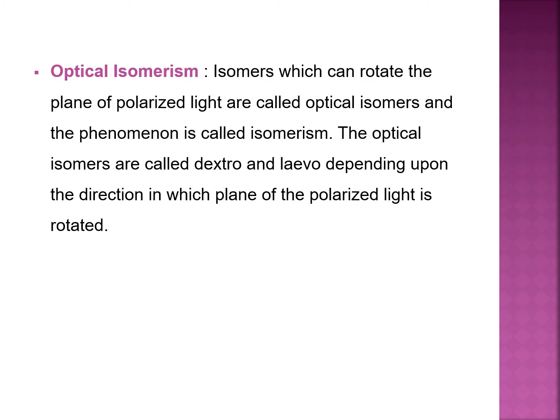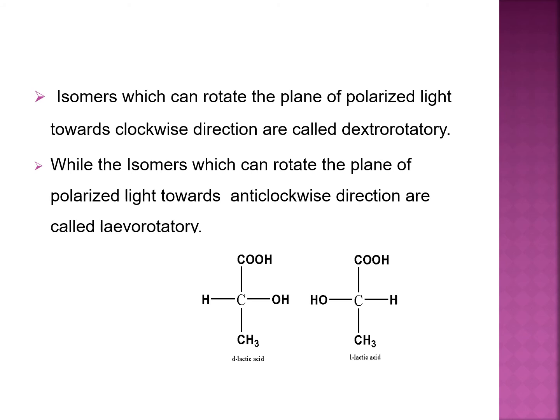Now, optical isomerism. Isomers that can rotate the plane of polarized light are called optical isomers, and the phenomenon is called optical isomerism. They are called dextro and levo depending upon the direction in which the plane of polarized light is rotated. Isomers that rotate the plane of polarized light in a clockwise direction are called dextrorotatory, while those that rotate it in an anti-clockwise direction are called levorotatory.